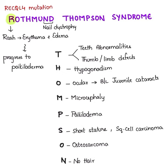In Rothmund-Thomson syndrome, using the mnemonic THOMPSOND-R: T stands for teeth abnormalities and thumb or limb defects. H stands for hypogonadism. O stands for ocular defects — these children are prone to bilateral juvenile cataracts, which is characteristic of this condition. M stands for microcephaly. P stands for poikiloderma. S stands for short stature and squamous cell carcinoma over the hyperkeratotic lesions.